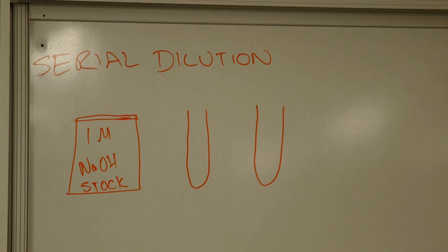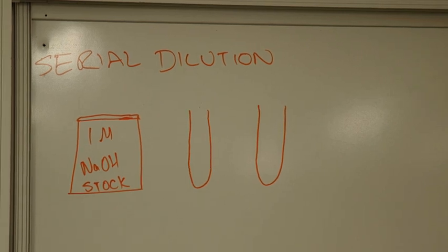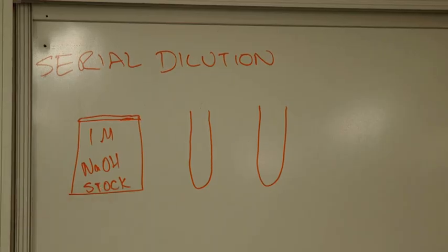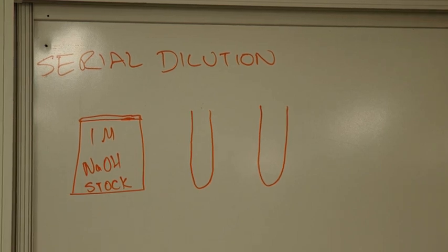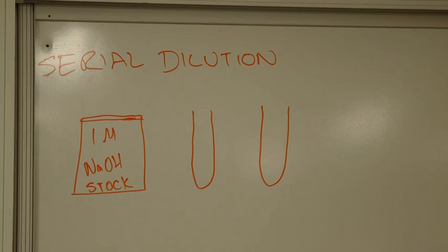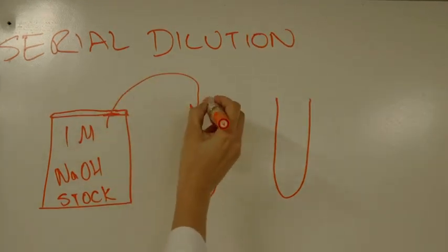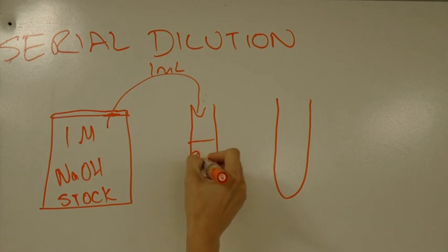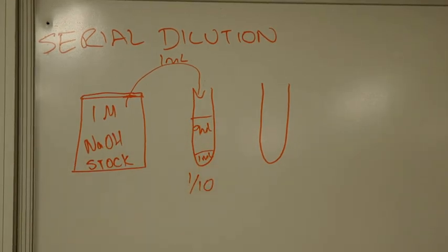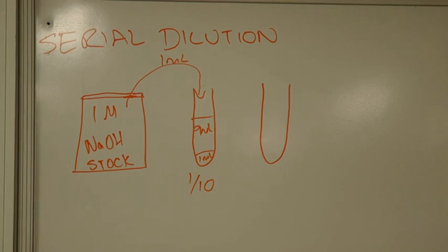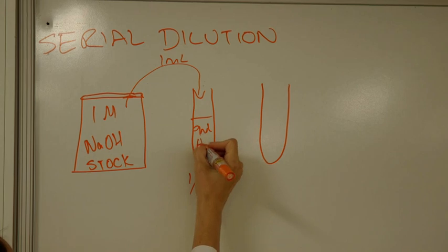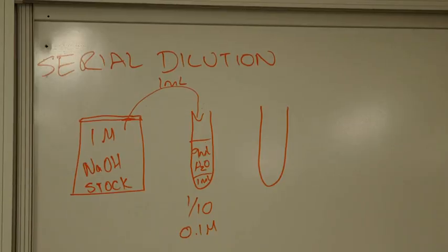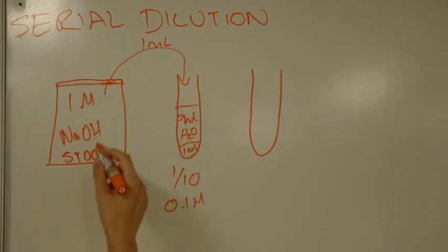Today we're going to be talking about dilutions — the two main types: serial dilutions and linear dilutions. Serial dilutions start with a stock solution — in this case a one molar sodium hydroxide stock. We take one mil from the stock and add nine mils of water, giving a one-in-ten dilution. One part stock, ten parts total. So if the stock is one molar, that gives us a 0.1 molar solution.